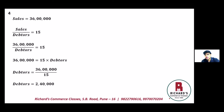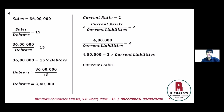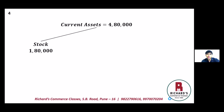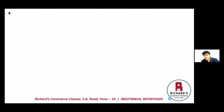Using current ratio of 2: current assets divided by current liabilities equals 2. Current assets is four lakh eighty thousand. So current liabilities equals four lakh eighty thousand divided by 2, which is two lakh forty thousand. Breakup of current assets: stock is one lakh eighty thousand, debtors is two lakh forty thousand, so other current assets balance is sixty thousand.